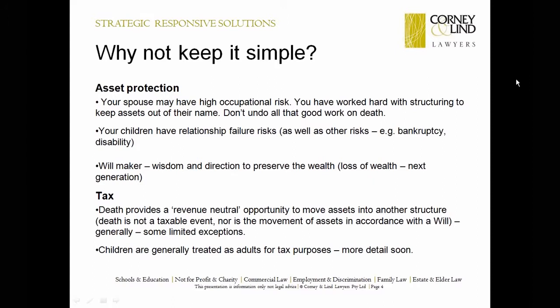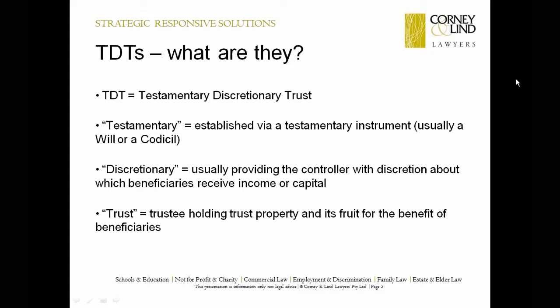So there are some asset protection reasons and there are some tax reasons. Generally, death is a revenue neutral event — that is, the movement of assets on the death of a person pursuant to their will does not usually create a stamp duty or capital gains tax event. So it is an opportunity to restructure asset holdings without revenue consequences. The other big ticket benefit of using testamentary discretionary trusts is that children are treated as adults for tax purposes. That is one of the key advantages, and I will unpack that in some detail in this presentation. So much so that these trusts are sometimes called 'trusts to die for' because you can only get them by dying.